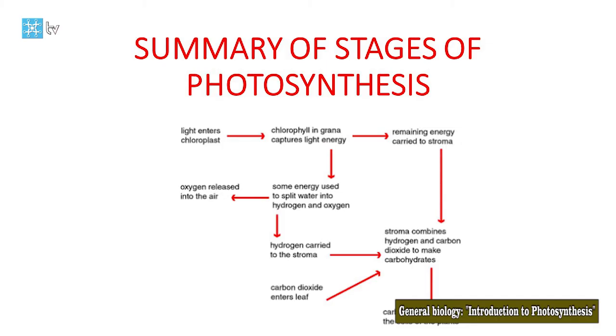Let's speak about the process of photolysis. The word photolysis means 'photon,' which is light, and it refers to disrupting water. In this process, water is split and forms oxygen atoms, hydrogen ions, and some electrons.